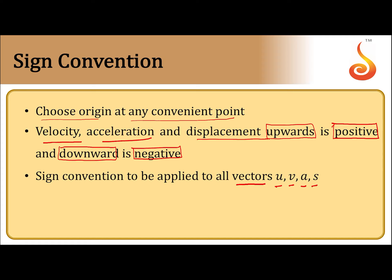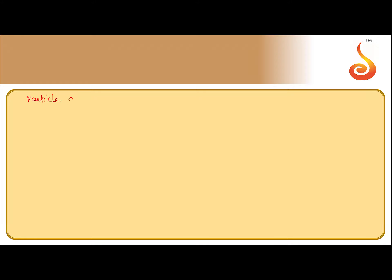For example, let us consider a simple case. Consider a particle dropped from a height. This is the ground; the particle is dropped from this height h. Now, it is dropped, therefore the initial velocity is 0. Remember, most often the ground is taken as the reference level.